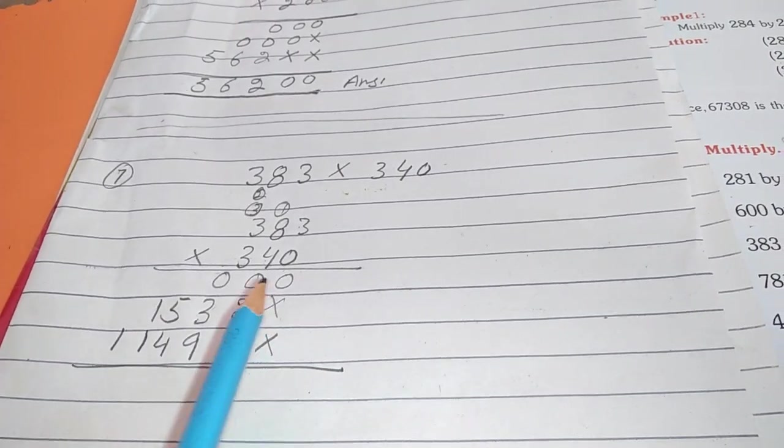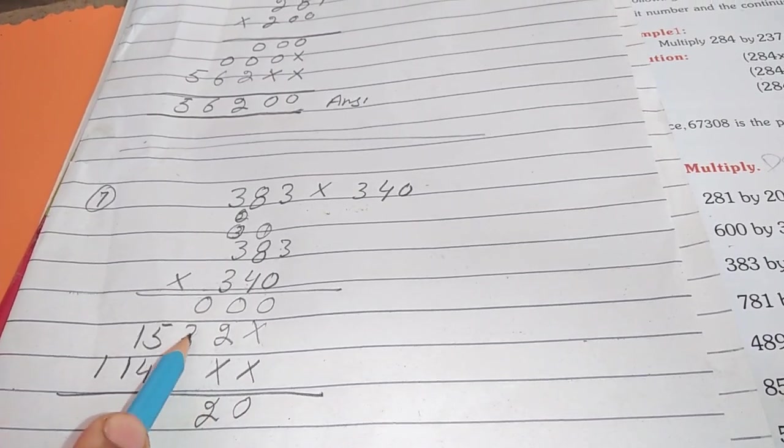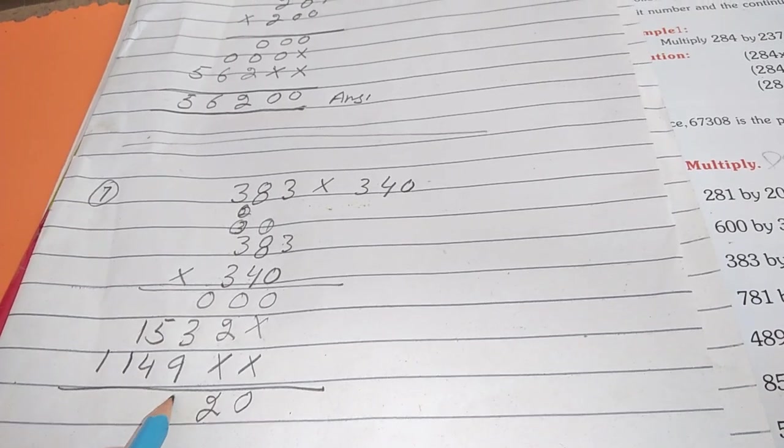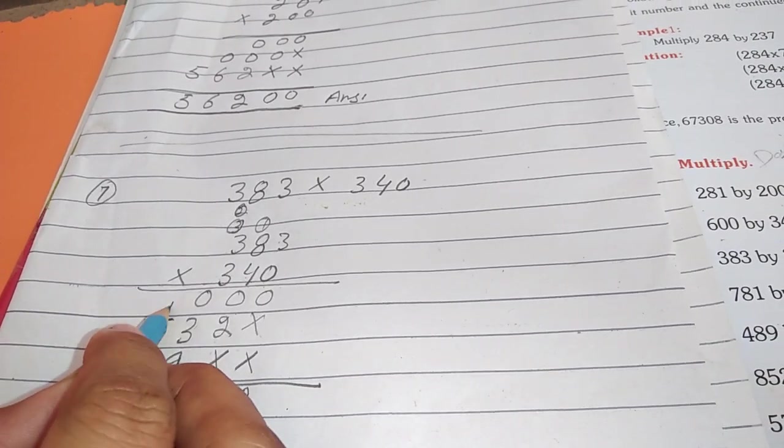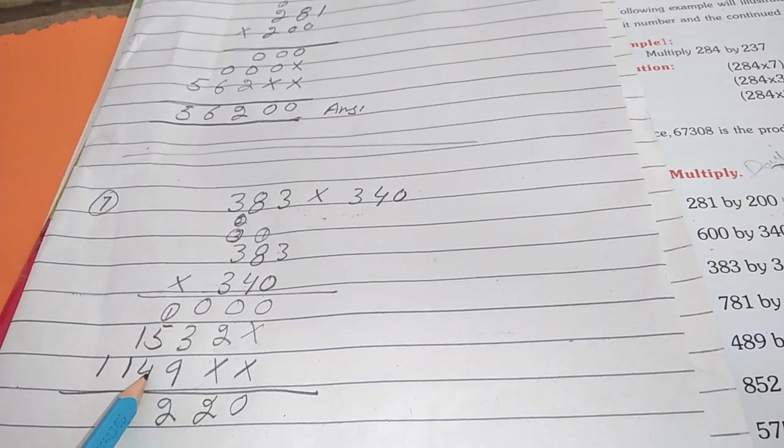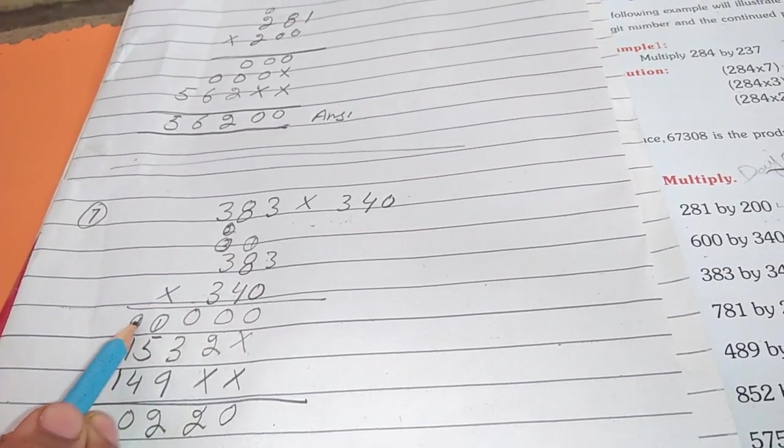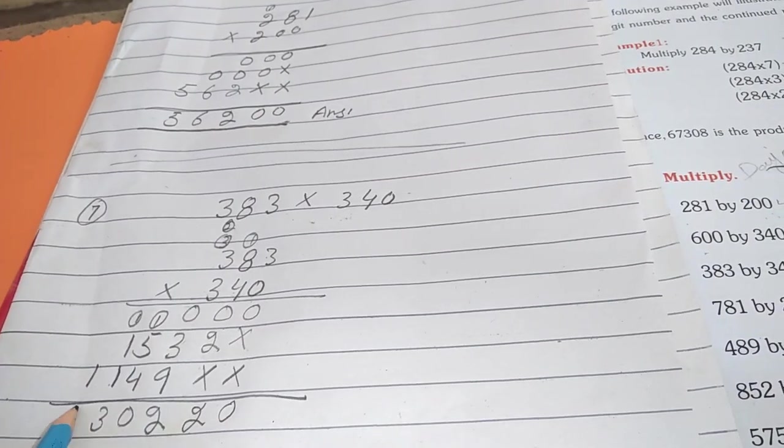Now we will add them. 0, 0, 2, 9 and 3 is 12. 5 and 1 is 6. 6 and 4 is 10, 0, 1 carry. 1, 2, 3, 7.